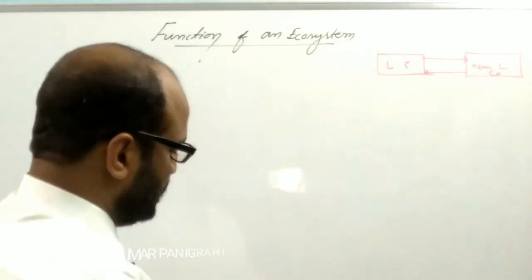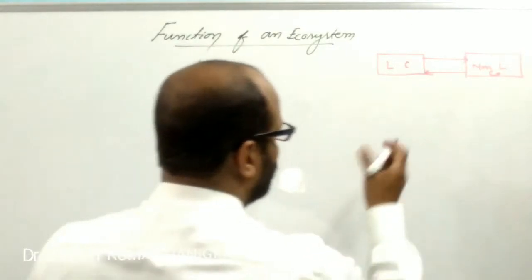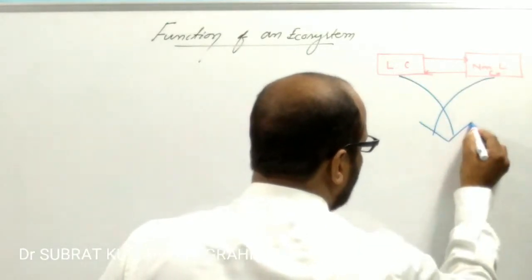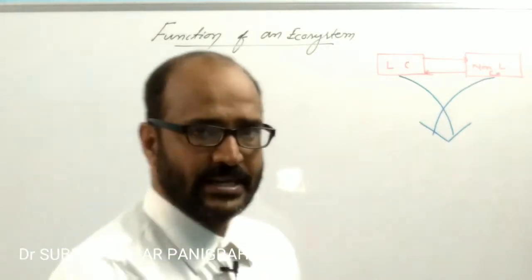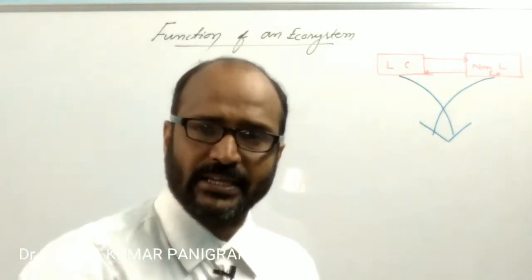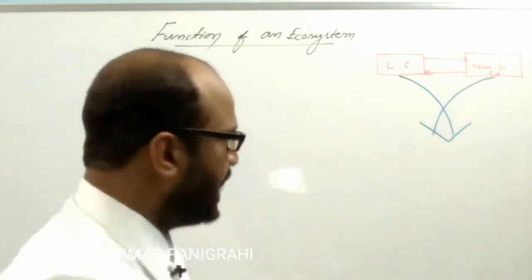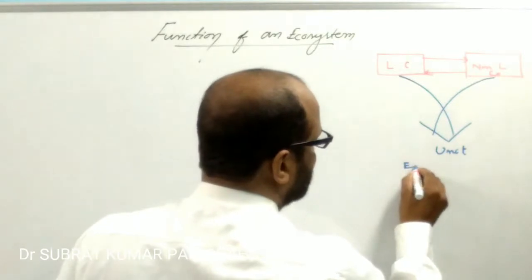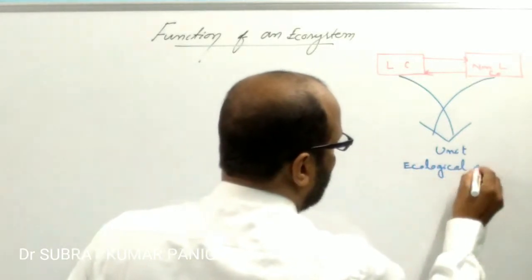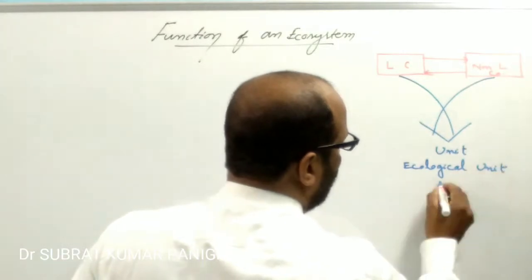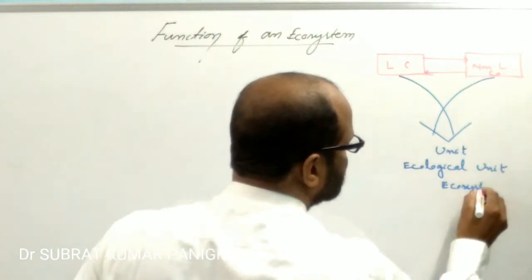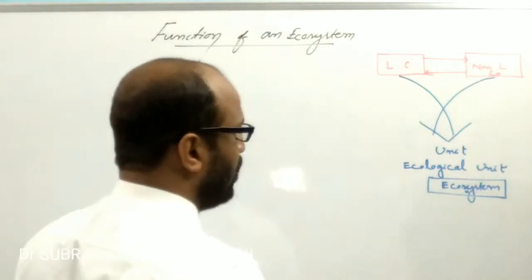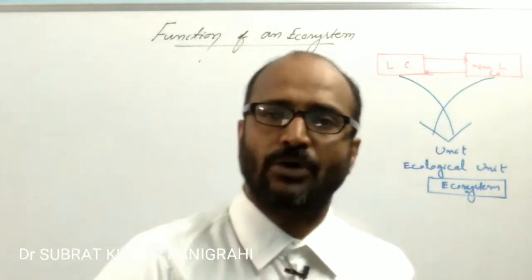These living components and the non-living components of the environment, they are interconnected and interdependent in such a way that they work as a unit. Such a unit is known as the ecological unit or also known as the ecosystem. The ecosystem is the highest level of integration of environment.